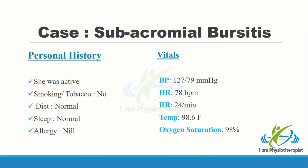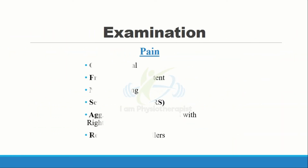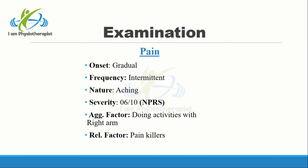The review of systems showed no involvement of any systemic issue with this pain. There was deep, aching, intermittent pain present at the anterolateral aspect of the right shoulder. Onset of pain was gradual, and the severity of pain was 6 out of 10 according to the numeric pain rating scale.